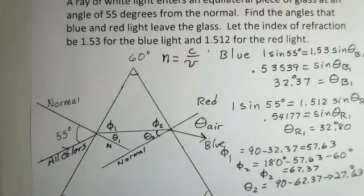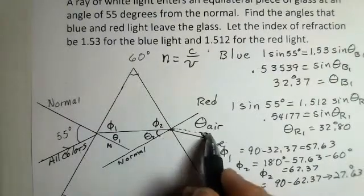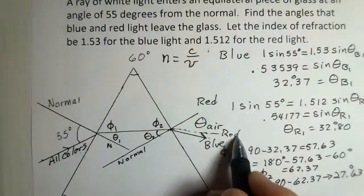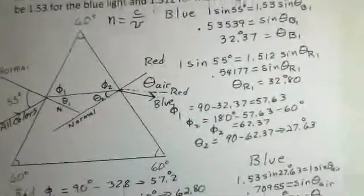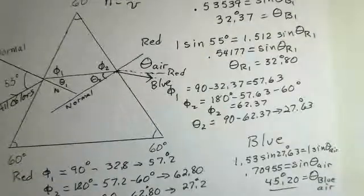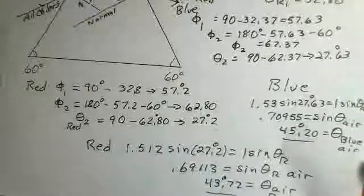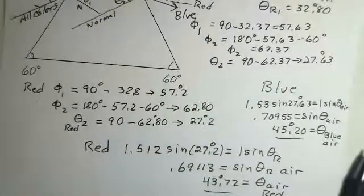The blue is refracted more out here. I'll kind of dot in the red. It's not quite that far off. But the red angle in air is a little bit less than the blue angle in air. The red angle is 43.72. The blue angle 45.2. So, keep practicing.